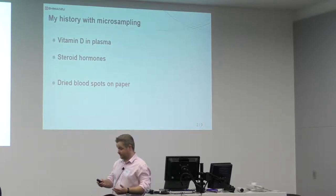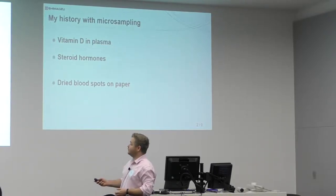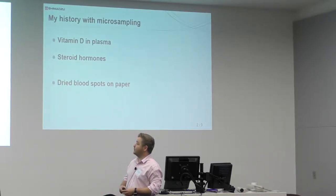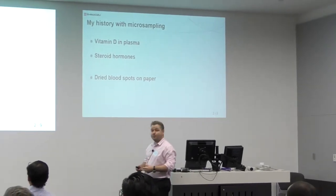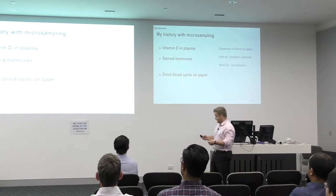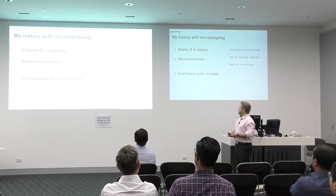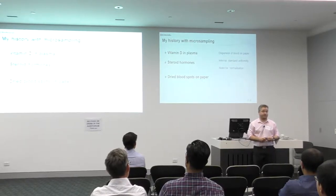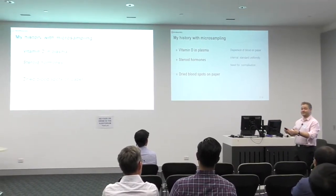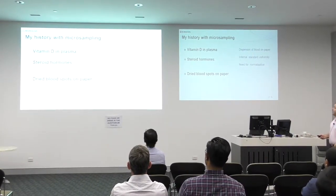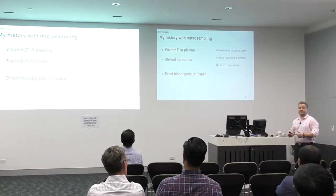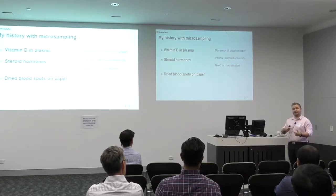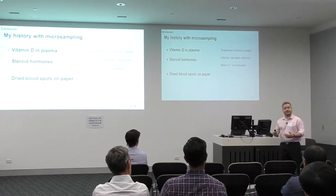I've got a limited history with micro-sampling. The first time I encountered this was when I was looking at endogenous metabolites in plasma — things like vitamin Ds and steroid hormones — and I was asked to look at these on dried blood spots on paper. I found that I couldn't get uniform dispersions of blood, I couldn't get internal standard uniformity when I spiked internal standard onto the card, I couldn't punch the cards very well, and I was doing it by hand. I really thought there was a need for normalisation of the compounds of interest compared to something endogenous in the sample, and I couldn't really find an easy way to do normalisation.